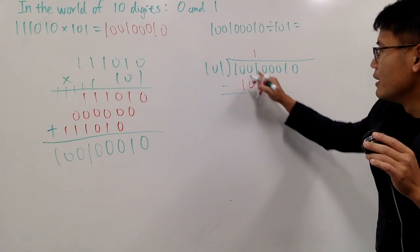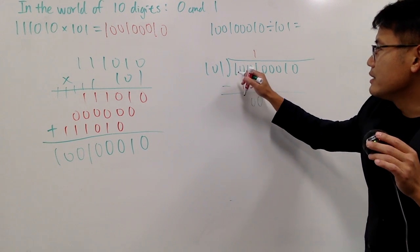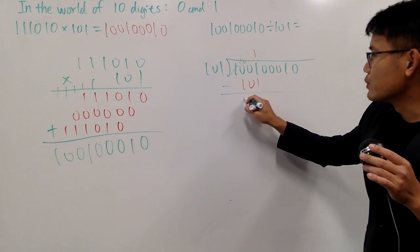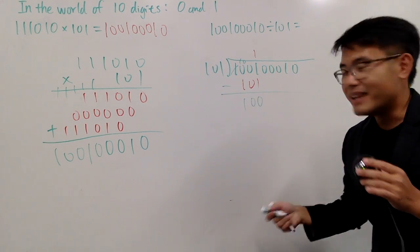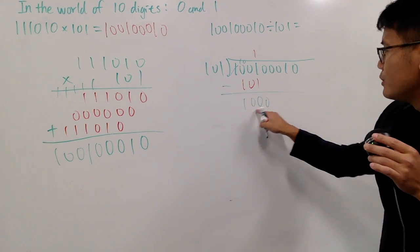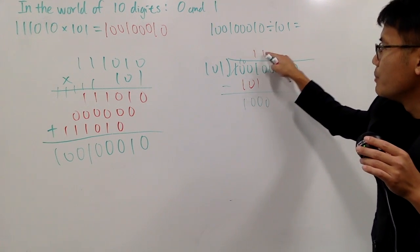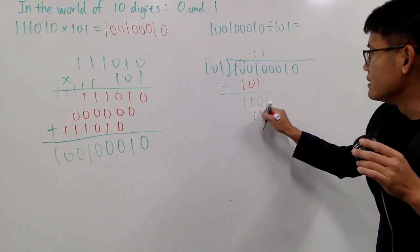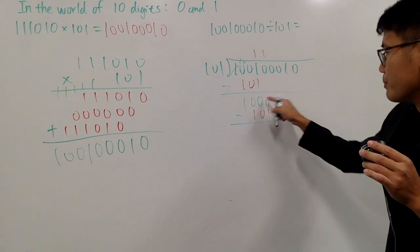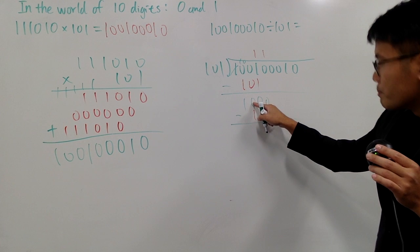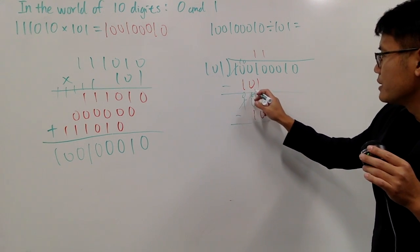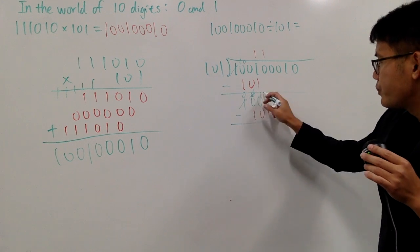Okay, 1 minus 1 is 0. 0 minus 0 is 0. This is 0 minus 1. You cannot do it. So you have to borrow. So this becomes 1, 0. 1, 0 minus 1 is 1. So it's just like that. And you continue. You bring down this 0. But you see, 1, 0, 1 goes into 1, 0, 0 one time. So put on 1 because 1 times this is 1, 0, 1. When you subtract, let's see. 0 minus 1 doesn't work. You have to borrow. But this is 0. So you have to borrow. You have to borrow again. So you make this 0 and then make this 10. But you borrow this. So this becomes 1 and this becomes 1, 0.